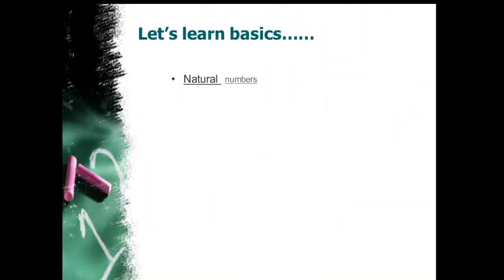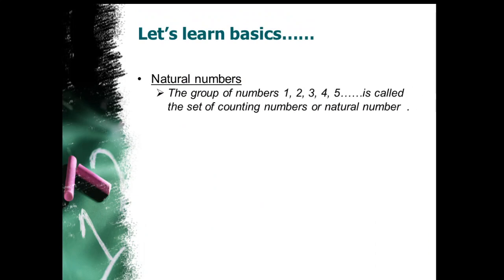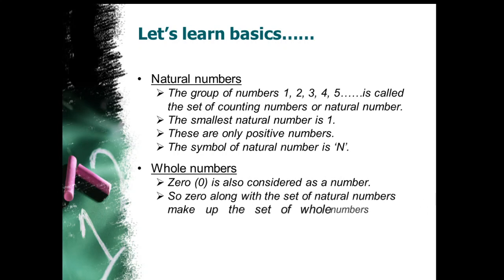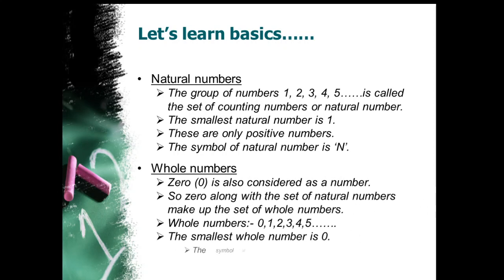The first thing is that we have learnt in our previous year about natural numbers. What are natural numbers? Natural numbers are a group of numbers: 1, 2, 3, 4, 5, and so on. All these sets of numbers are called natural numbers, or they are even called counting numbers. The smallest natural number is 1, and these natural numbers are said to be positive numbers. The symbol of natural number is capital N.